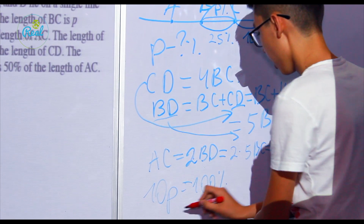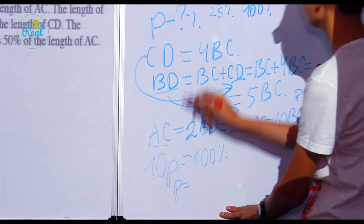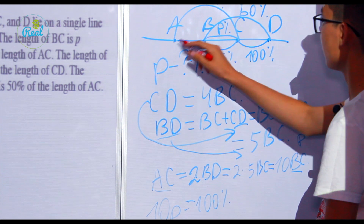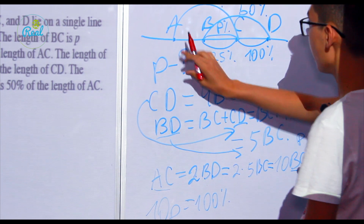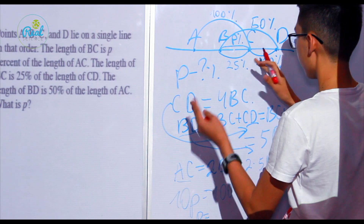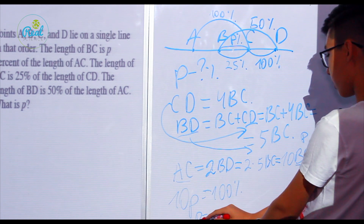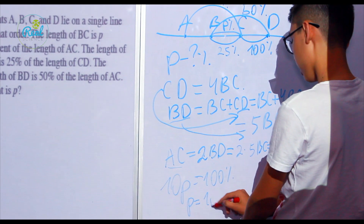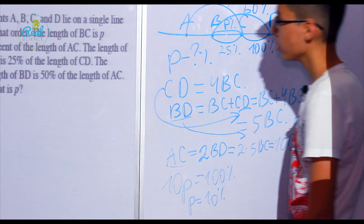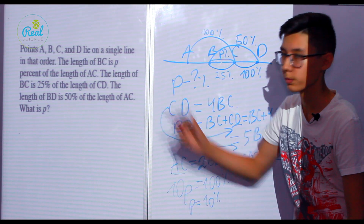Then we find P. Since AC equals BC plus AB and in total it's 10·BC, we get P equals 10 percent. So the solution to this problem is P equals 10 percent.